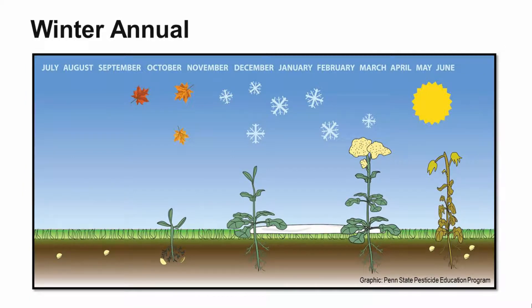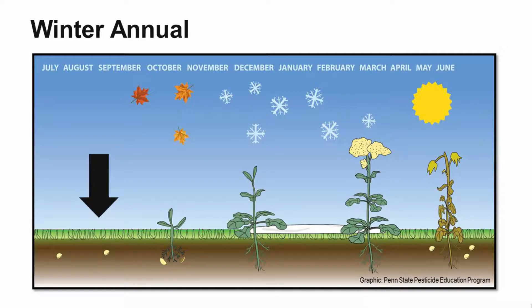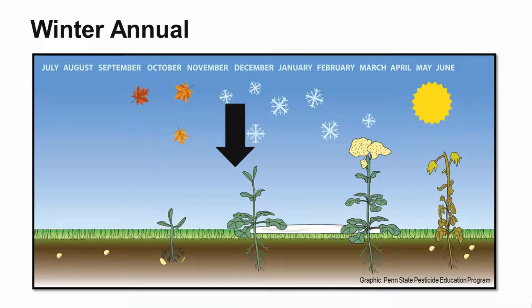Now we move to the winter annual. Note that the months of the year at the top are different — we go from July to June — picking up really at the start of the winter annual in the fall of the year. Again, we have seeds in the soil waiting to germinate. The main thing here is the winter annual is going to germinate sometime in the fall. Even though the arrow points to September–October, this can actually happen as early as August through that fall period.